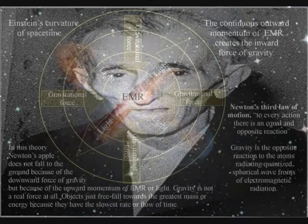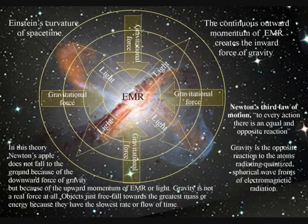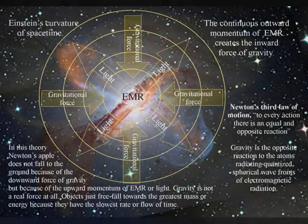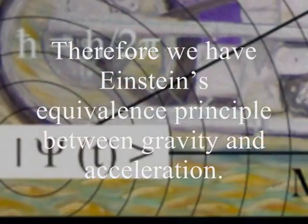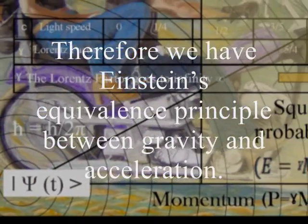In this theory, gravity is a secondary force to the electromagnetic force. Objects just freefall towards the greatest mass or energy, because it has the slowest rate that time flows.